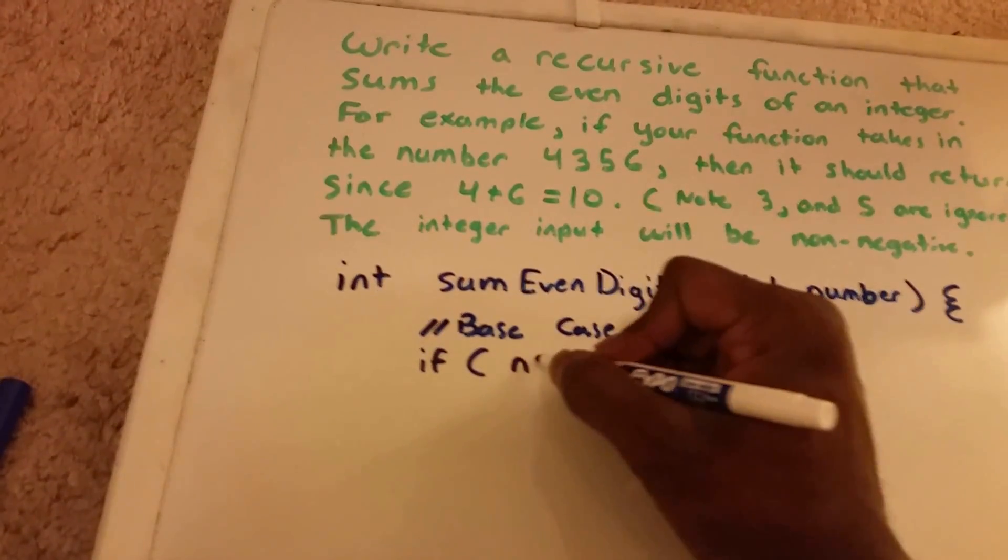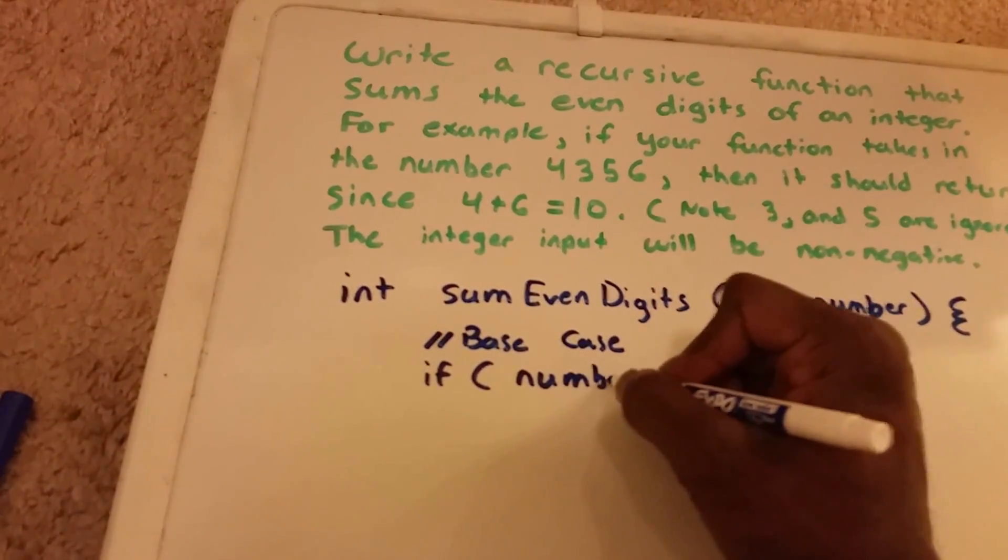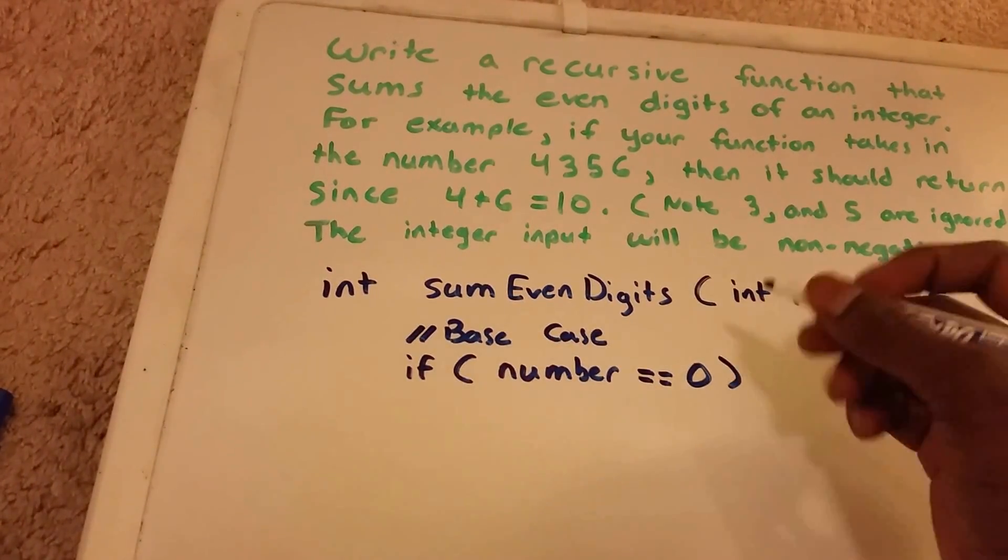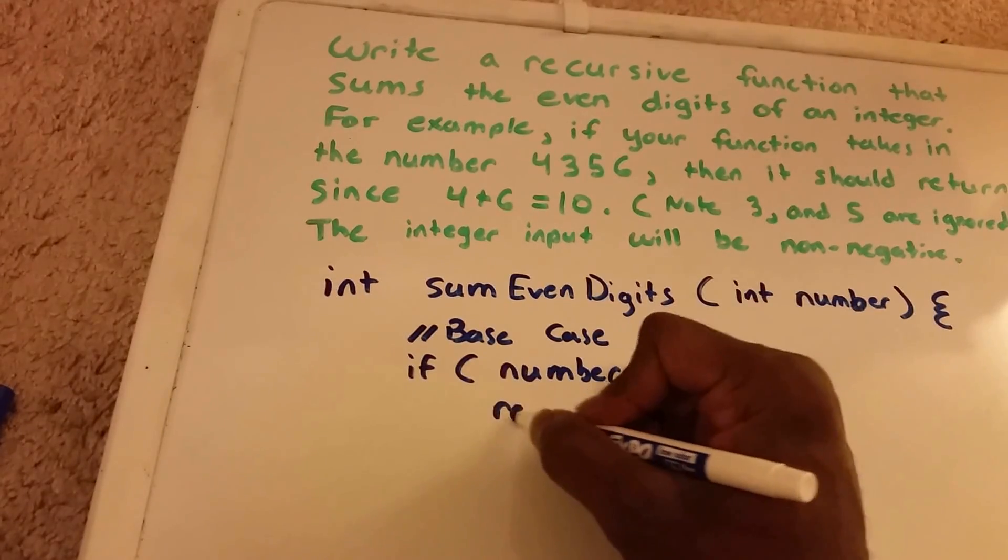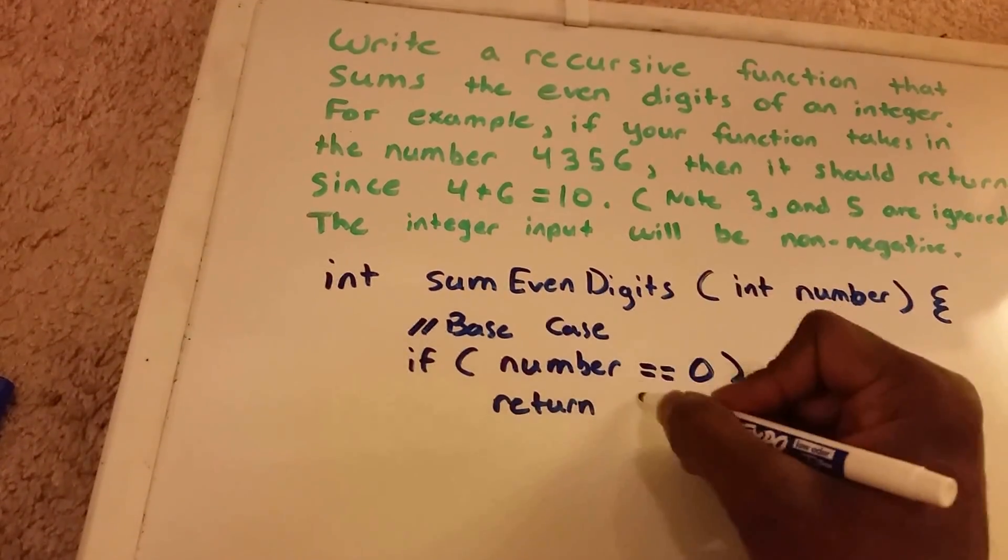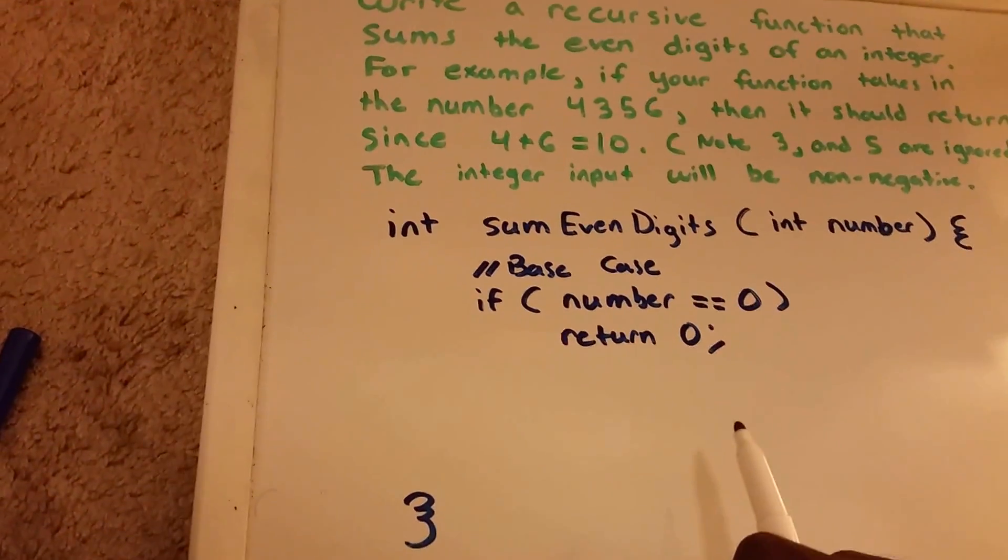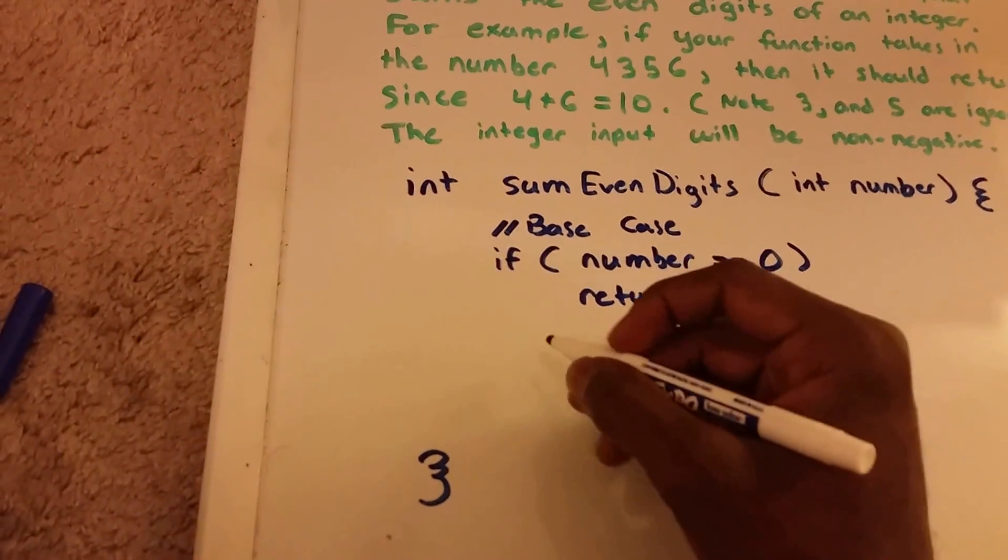So our base case is if number equals zero, then we're going to return the number zero. Now for our recursion part.